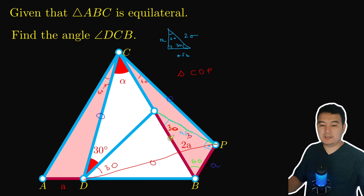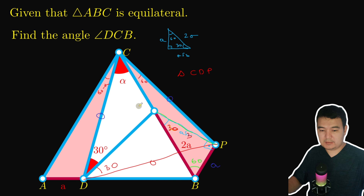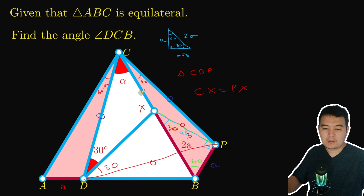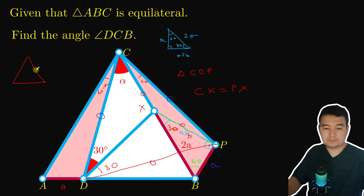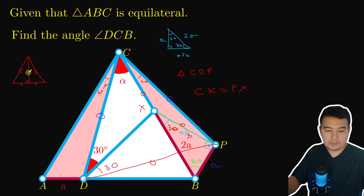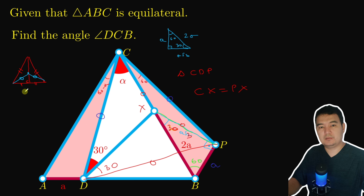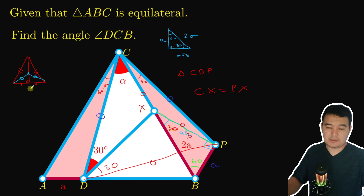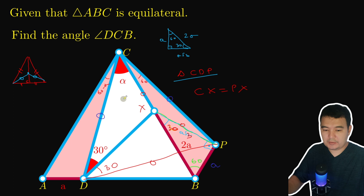Since this is 30 degrees and we have 30 degrees here, I claim that if we call this point X, then CX equals PX. The reason is: for any isosceles triangle, if you have a perpendicular bisector and you take any point on that line and connect it to the vertices of the triangle, those two distances will be equal. That is the definition of the perpendicular bisector.